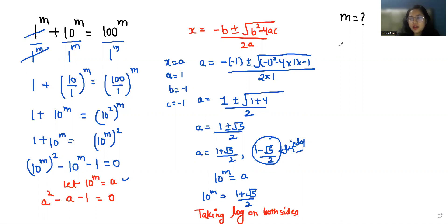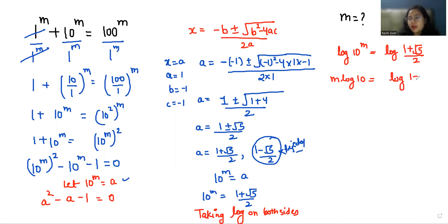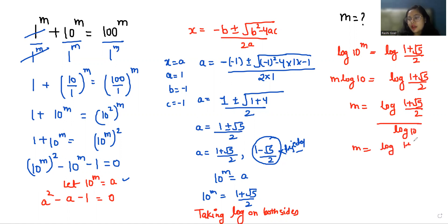Taking log on both sides: log(10^m) = log((1 + √5)/2), so m·log10 = log((1 + √5)/2). Therefore, m = log((1 + √5)/2) / log(10), which equals log base 10 of (1 + √5)/2. This is the final value of m.